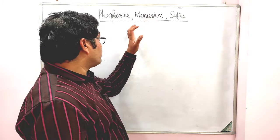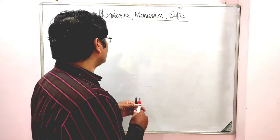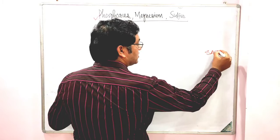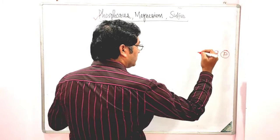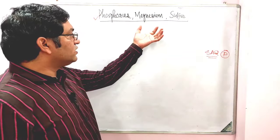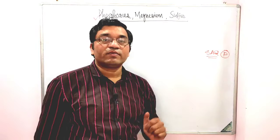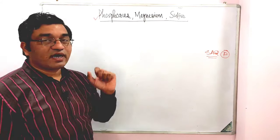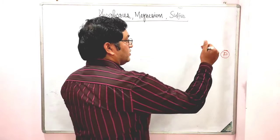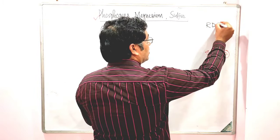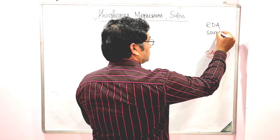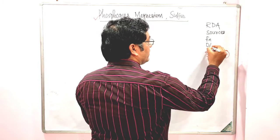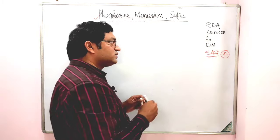Now coming to the description of Phosphorus, Magnesium and Sulphur. Phosphorus is an important short answer question topic. You may also get a brief answer question on the biochemical functions of Magnesium or biochemical functions of Sulphur. We will discuss these under the headings of RDA (recommended dietary allowance), sources, functions, and deficiency manifestations.